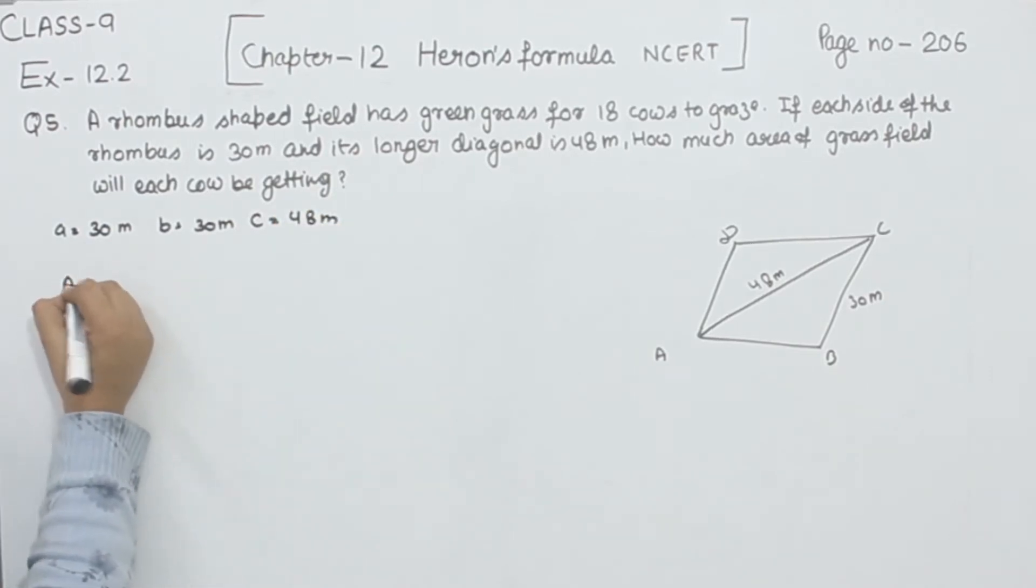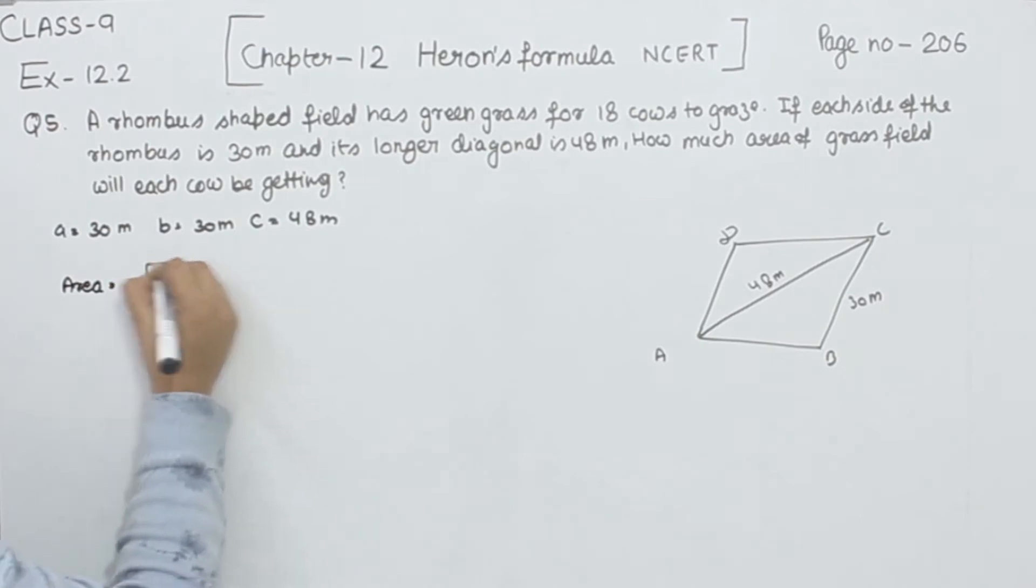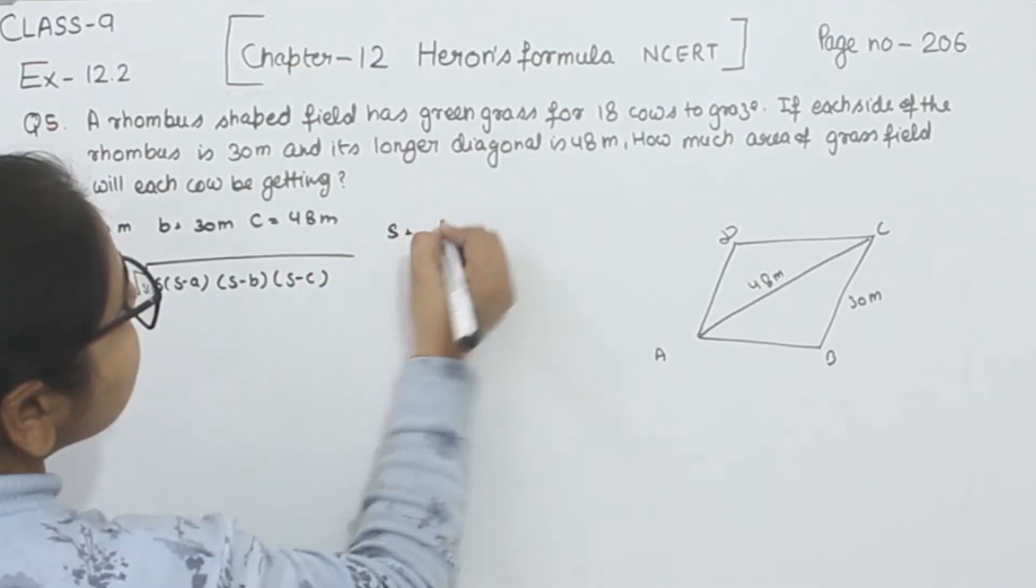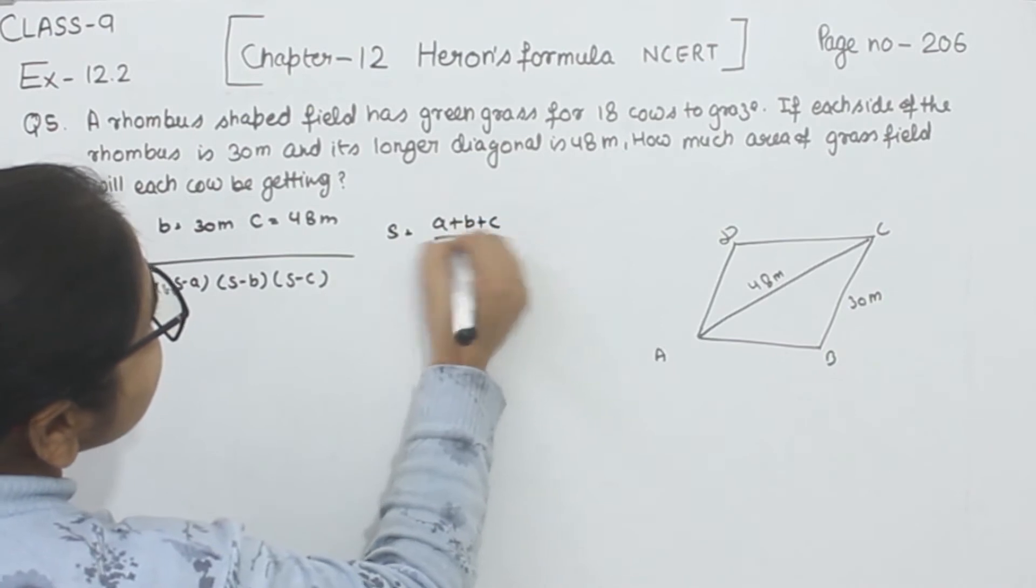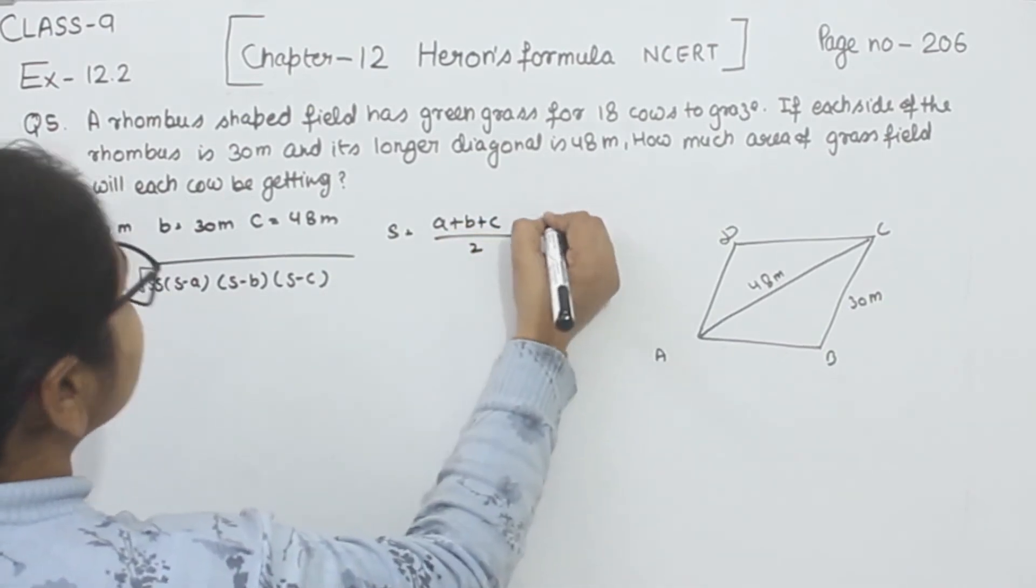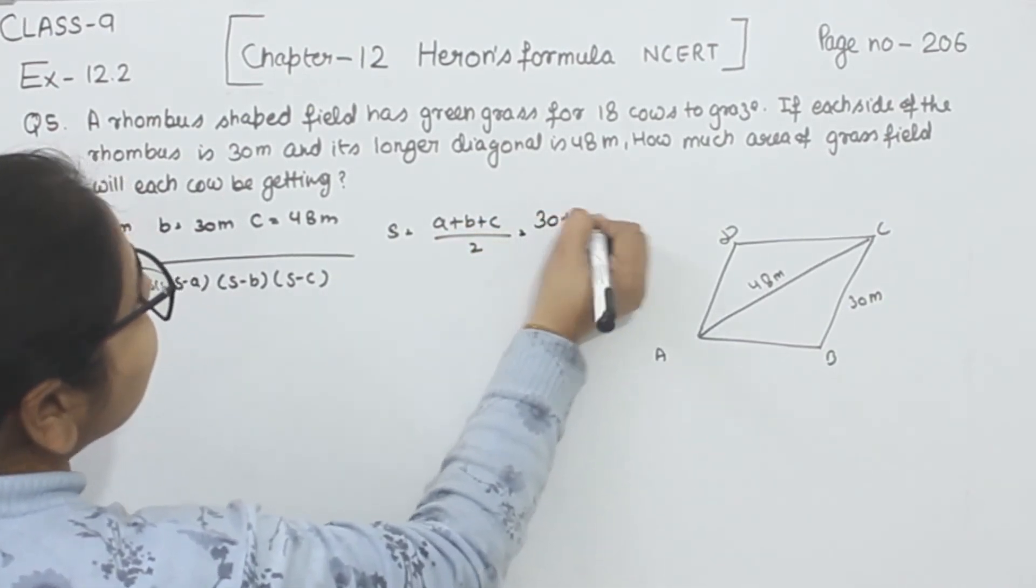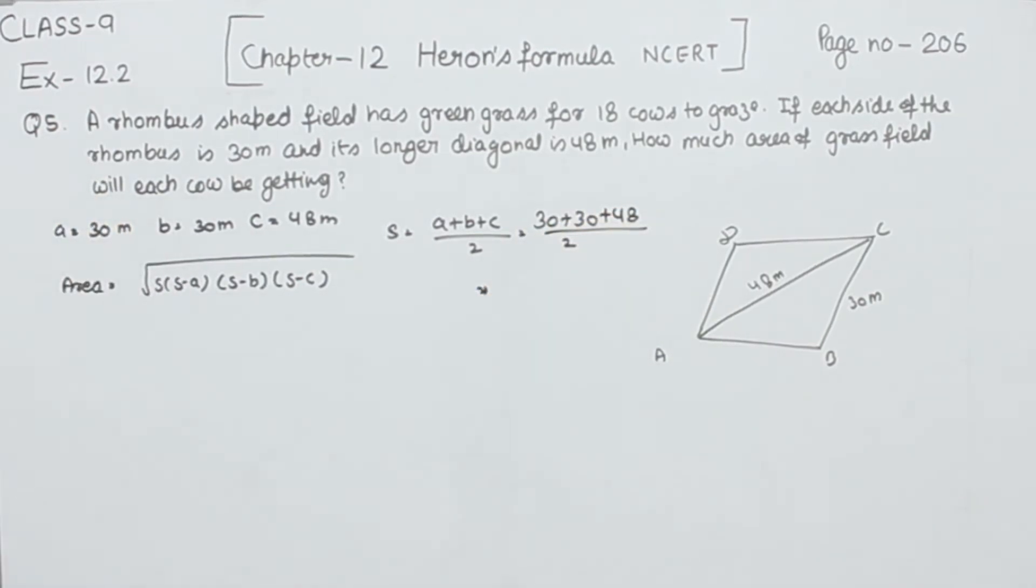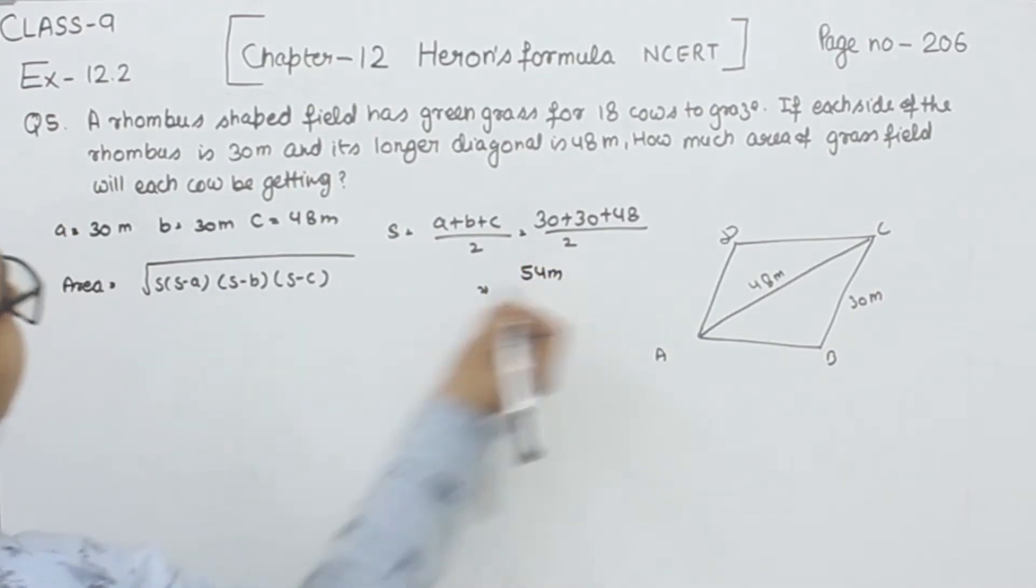Now we will find the area with the help of Heron's formula. So, √(S(S-A)(S-B)(S-C)). Now for S, A plus B plus C divided by 2. So this is 30 plus 30 plus 48 divided by 2. We are going to solve this one, so we get the value as 54 meters.